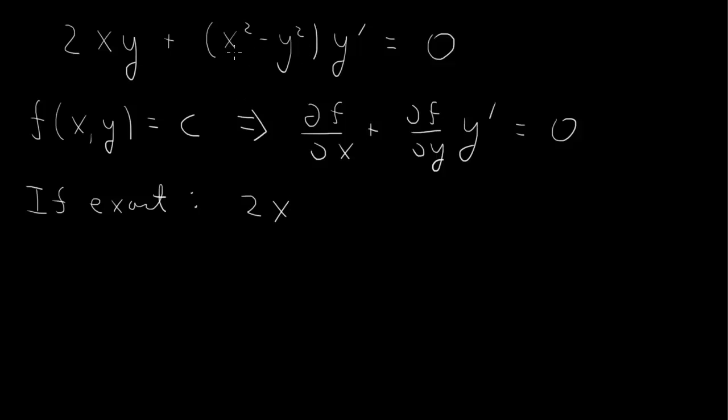And this one is df/dy, so if we take the partial of this with respect to x, we also get 2x. So that says that d squared f dx dy is equal to d squared f dy dx. So this is an exact equation then.